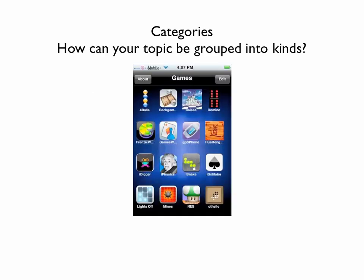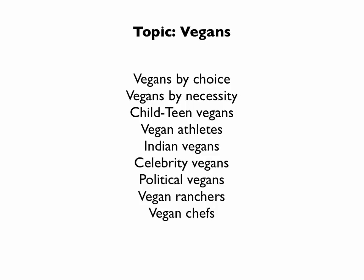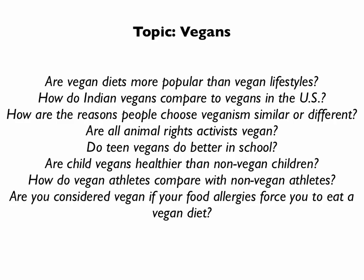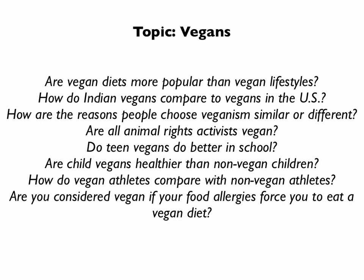Next, think about how your topic can be grouped into kinds. For example, with vegans, I can think of all the different kinds of vegans, and then think about how I might compare and contrast those various kinds. Write questions like this. Now do this for your own topic — how can you group your topic into various kinds? Write 10 questions comparing and contrasting these different types.